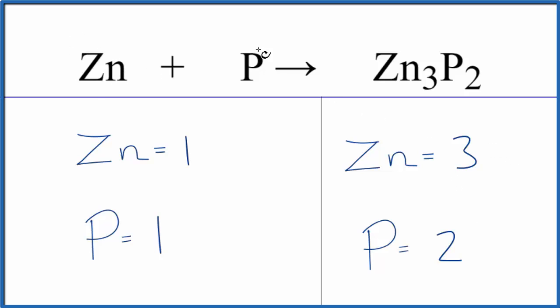Because the zinc and the phosphorus are all by themselves, it's really easy to balance because when we change the coefficient here, it doesn't change anything else. So if I put a three in front of the zinc, one times three, that'll give me three zinc atoms, so zinc is balanced.